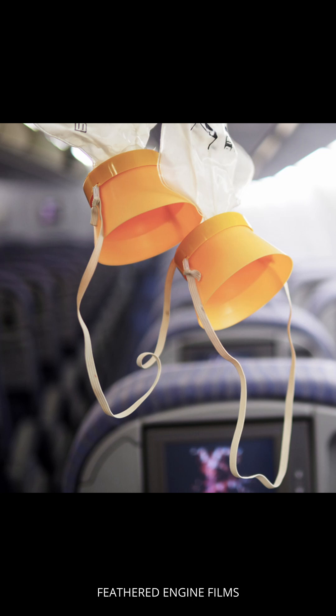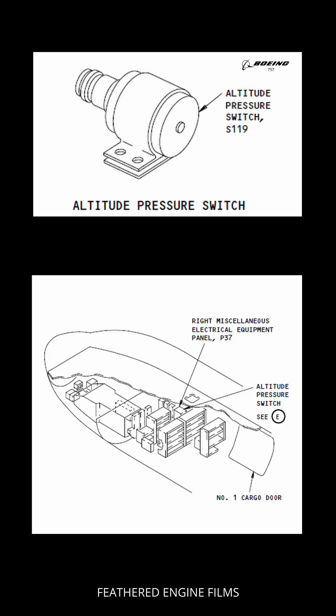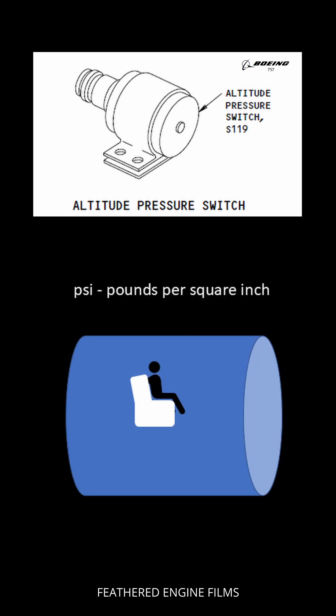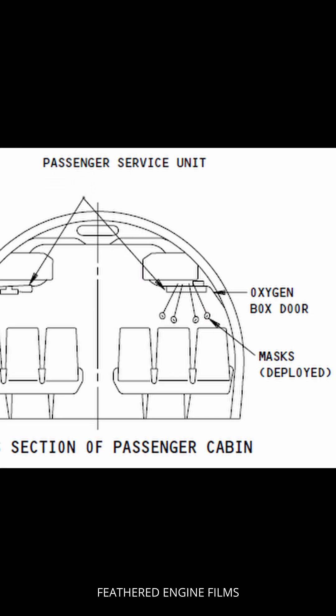The doors open either automatically by an aneroid switch or a hand operated switch. The aneroid switch is under the cabin floor, in an area usually called the avionics bay. It monitors the air pressure inside the aircraft, which is a lot lower than on the ground but a lot higher than outside. If it sees the air pressure drop to an altitude of about 14,000 feet — remember your aircraft would most likely be flying around 30,000 feet — it will send a signal to the latches keeping the module doors closed, and they will open, allowing you access to the mask.